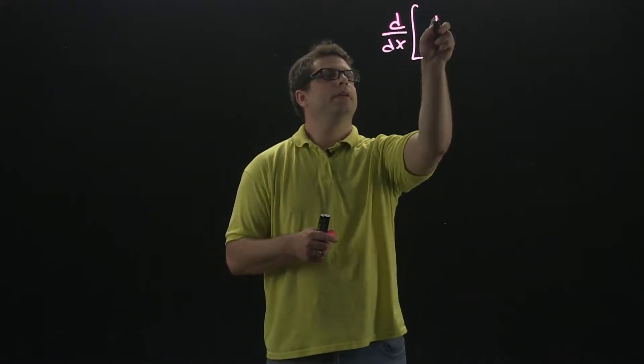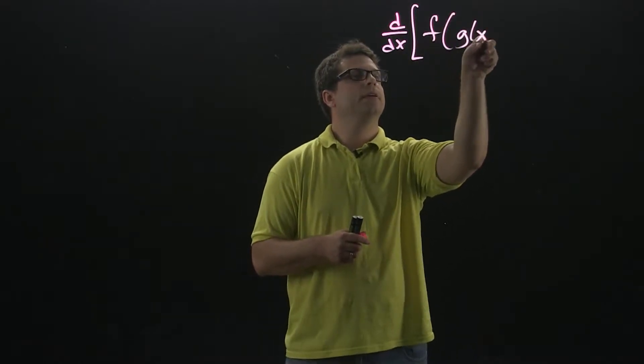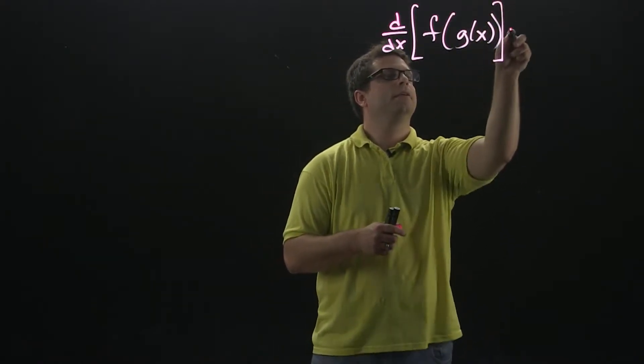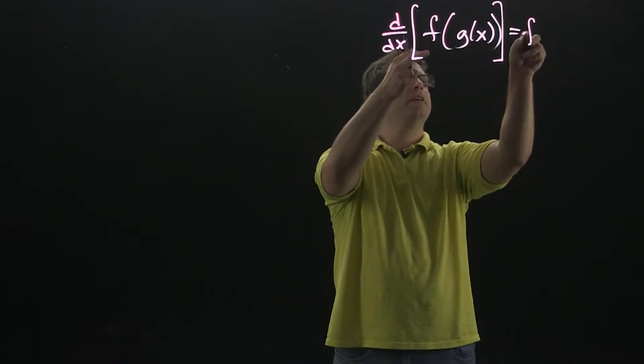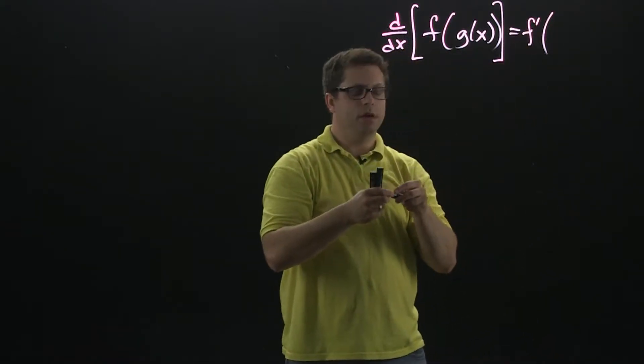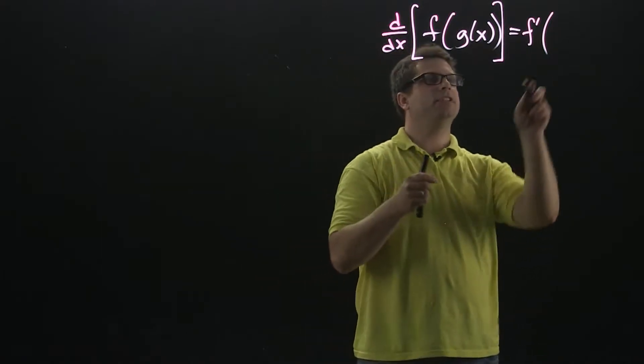Now, the formula for the chain rule is: you're going to differentiate the outside function f and leave the inside alone, so the inside function is g.